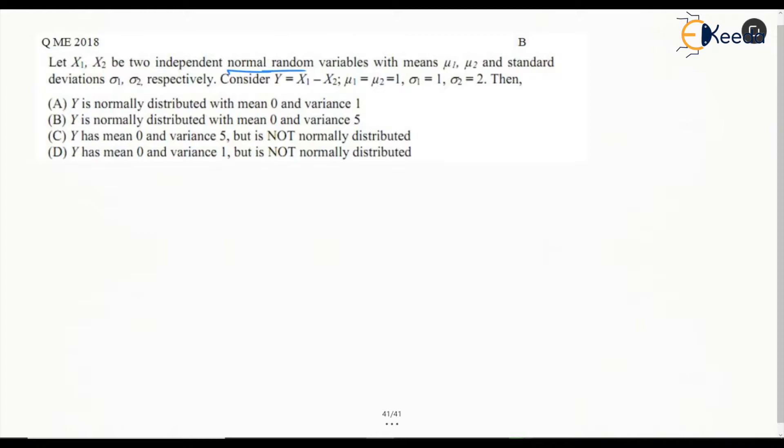We have X1 and X2 as two independent normal random variables with mu1 and mu2 being the means and sigma 1 and sigma 2 being the standard deviations. Now Y is given by X1 minus X2, so it is a linear combination of the two independent variables.